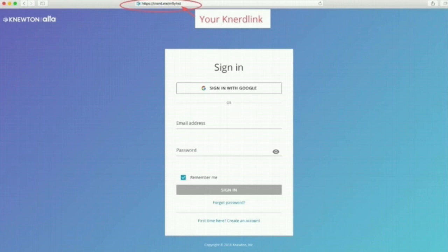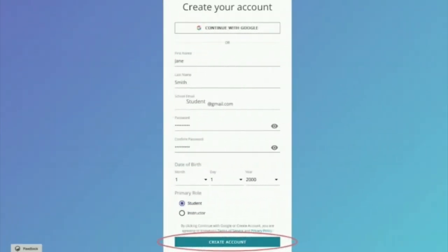To get set up with your Alta course, paste your NERD link, which is provided by your instructor, into your browser. The link should start with NERD.me. On that page, select Create an Account, and fill in the form. Make sure to use your school email address to register for Newton.